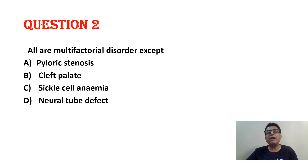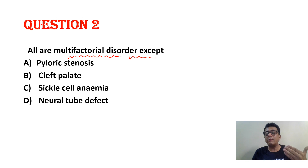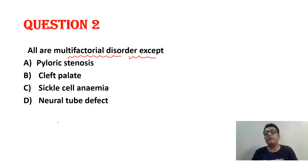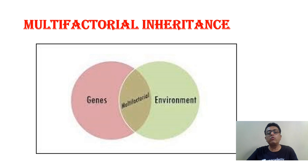Now, 'all are multifactorial disorders except.' Sometimes we read genetics — Mendelian inheritance, non-Mendelian inheritance, autosomal recessive/dominant — but this topic sometimes we leave. Multifactorial disorders. The question is: pyloric stenosis, cleft palate, sickle cell anemia, neural tube defect — which are multifactorial disorders? Multifactorial disorders are where two or more genes with additive effect of environment are responsible for some condition.